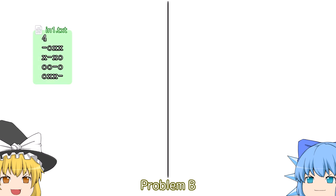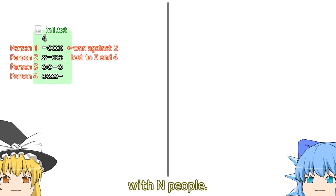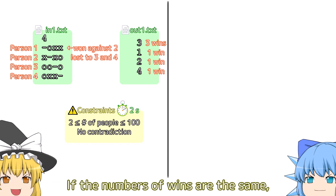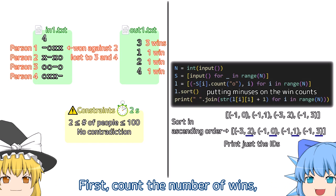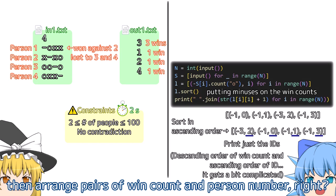Problem B. There are results from a round-robin tournament with n people. Arrange them in descending order of their numbers of wins. If the numbers of wins are the same, arrange them in ascending order of their ID numbers. First, count the number of wins, then arrange pairs of win count and person number.